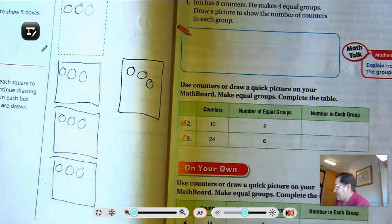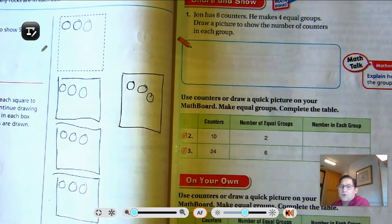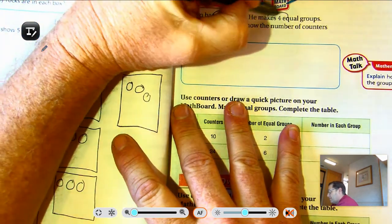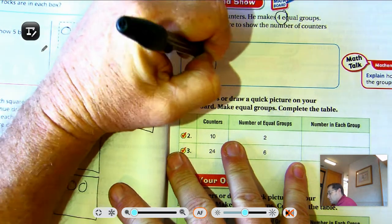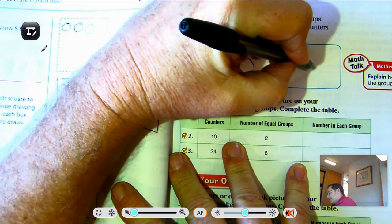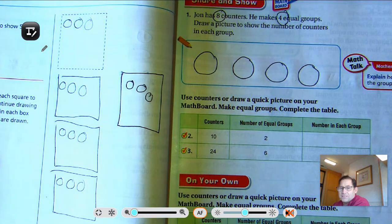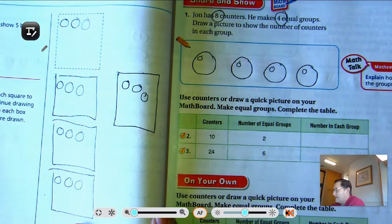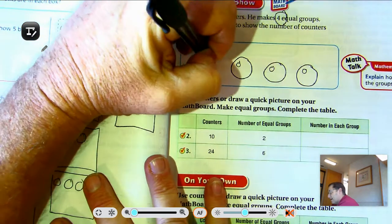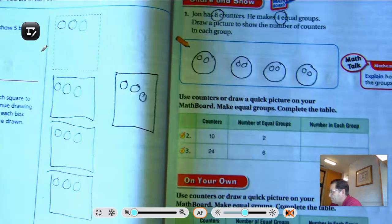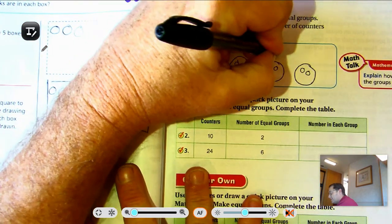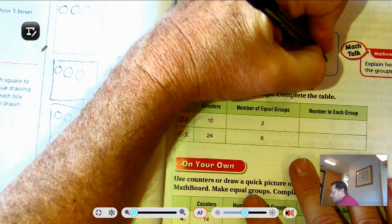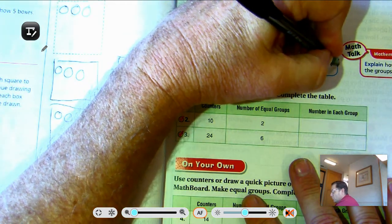Right now, 225, number 1. John has 8 counters. He makes 4 equal groups. Draw a picture to show the number of counters in each group. So we have 8 counters he's going to share, 4 equal groups. So 1, 2, 3, 4. Those are our 4 equal groups. Now he has to share 8 counters amongst those 4 groups. So let's put 1 in each group. Okay, that's 4. So I can add more, right? 5, 6, 7, 8. Okay, so 2 in each group.